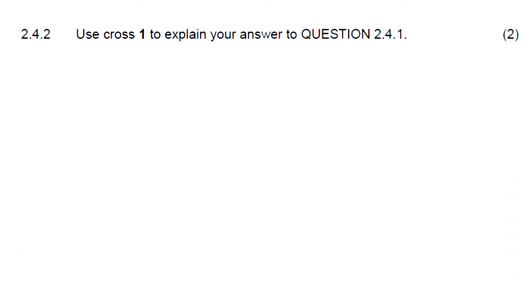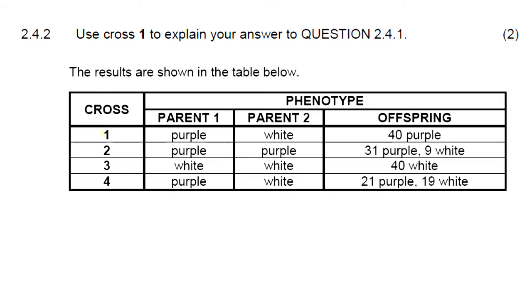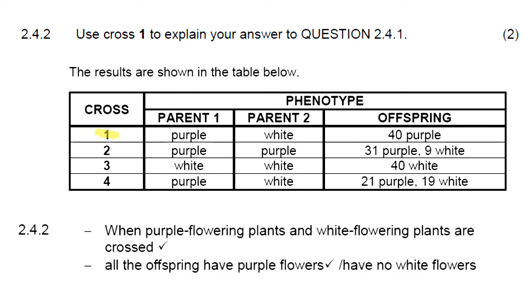When we look at question 2.4.2, use cross one to explain your answer to question 2.4.1. So we go back to our table and they want us to specifically use cross one over here for two marks. And this is an easy one because we're going to tell them exactly what happened in the table. Namely, when you cross a purple flower and a white flower, all the offspring have purple flowers.